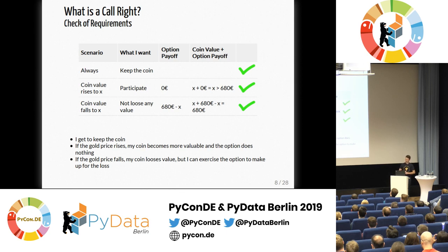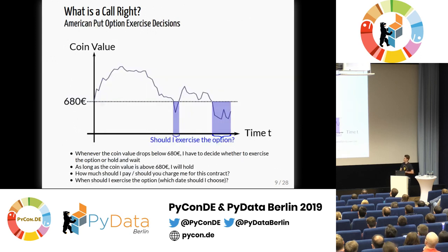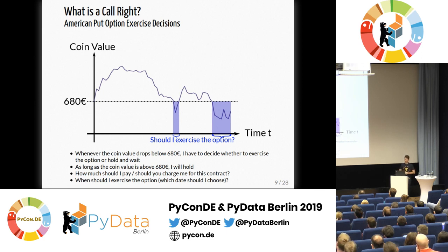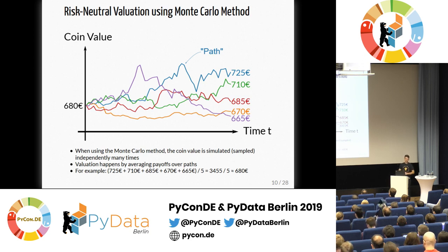However, I am tasked with a very difficult decision: should I exercise my option or not? If on any day the coin value is above 680 euros, there's no decision to make. But on any day where it's below 680 euros, I have to decide — do I stay in the contract or exercise it? Once exercised, it's gone. I need to optimize how to do that, and you need to determine how much I should pay you now. To calculate that value, we need the concept of risk-neutral valuation. This is a very broad topic and I won't go into it deeply — we'll do it very simply.